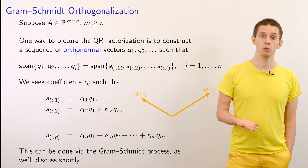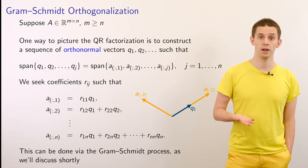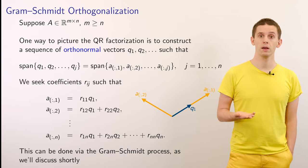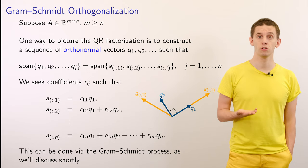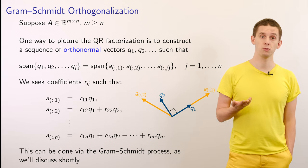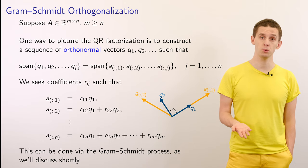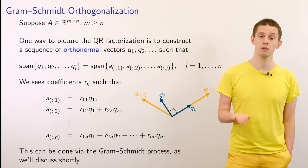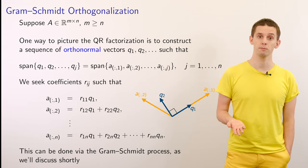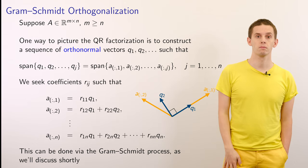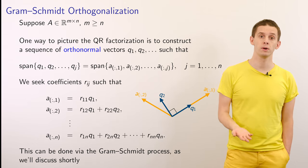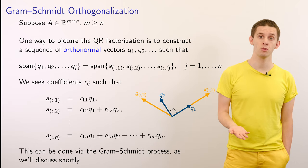We could position q1 to align with a1, and position q2 to span the same space as what we get when we add a2, but select it so that it is orthogonal to the existing q1. This can be done using the Gram-Schmidt process, and we'll look at the details shortly.